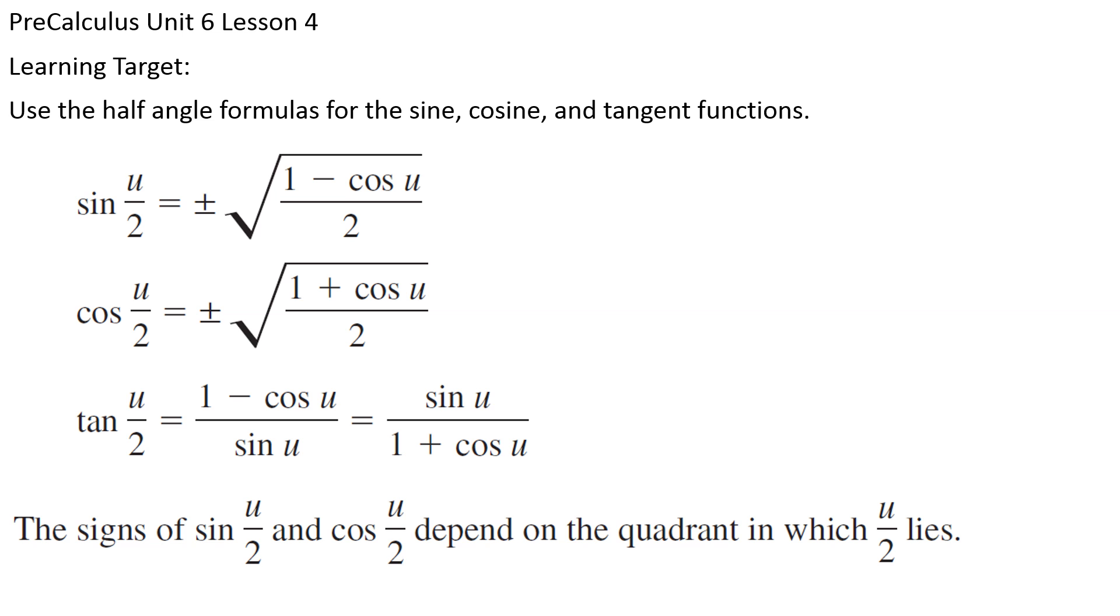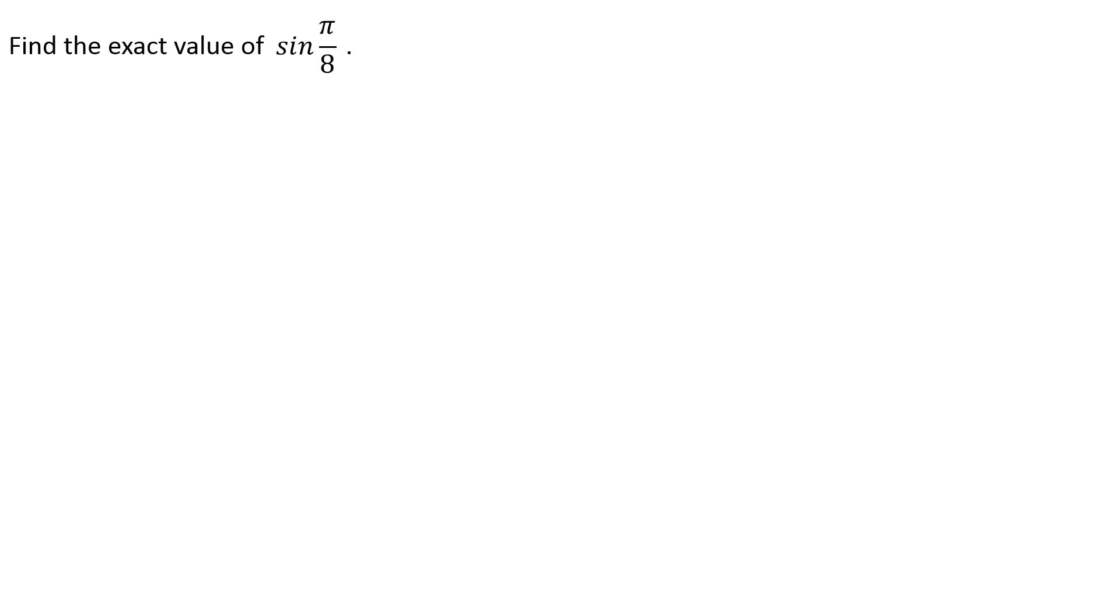So to figure out if our answer is supposed to be positive or negative, we have to be able to identify our angle u, divide that by 2, and then figure out what quadrant are we in. OK, again, we like to do three things: find exact values, solve equations, and verify identities.